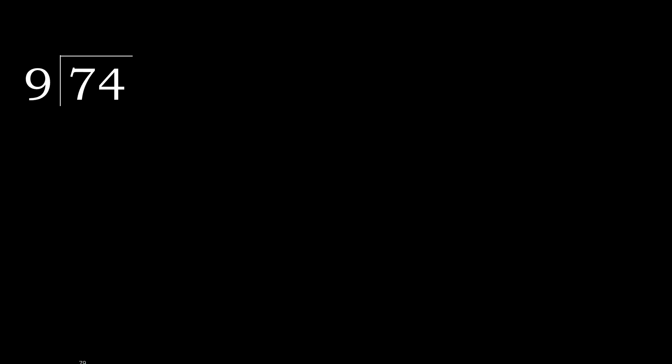74 divided by 9. 7 is less, therefore move to next. 74 is not less, therefore work with 74. Find which number, when multiplied by 9, is nearest to 74 but not greater.